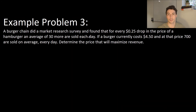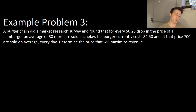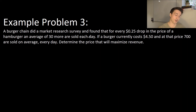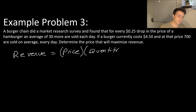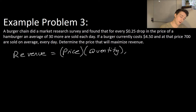Now we're moving on to example problem number three. Here we're not using shapes, but using optimization to maximize revenue. A burger chain did a market research survey and found that for every 25 cent drop in the price of a hamburger, an average of 30 more are sold each day. If a burger currently costs $4.50 and at that price 700 are sold on average each day, determine the price that will maximize revenue. Revenue equals price multiplied by quantity sold.